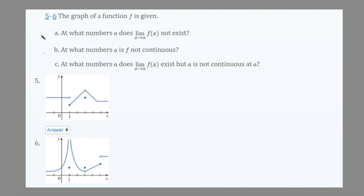Let's move on to numbers 5 and 6. The graph of function f is given. At what numbers a does the limit, as x goes to a, of f(x) not exist? For graph 5, the x-value at which the limit does not exist is 1, because from the left side and right side they're both reaching different numbers. There's also a removable discontinuity, but from the left and right side they're both reaching the same limit, so the limit does still exist there.